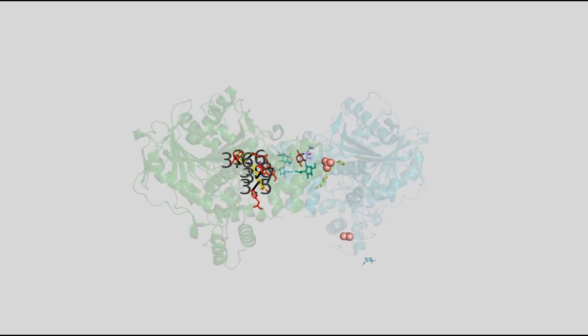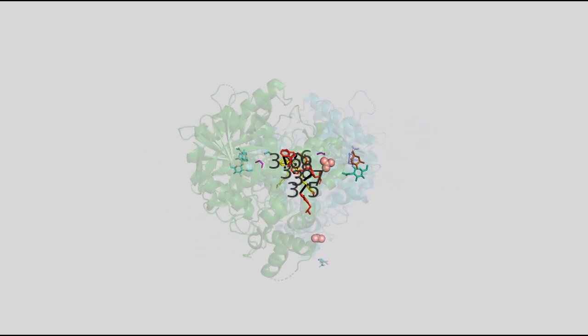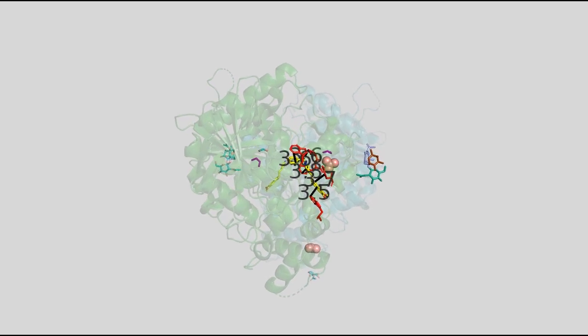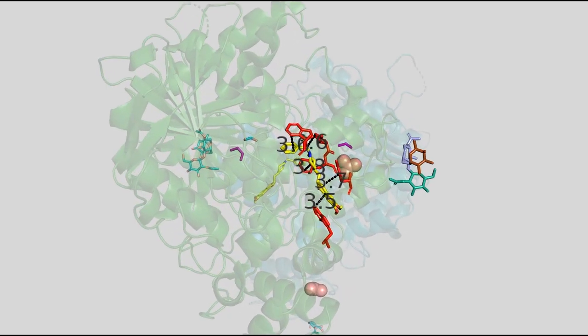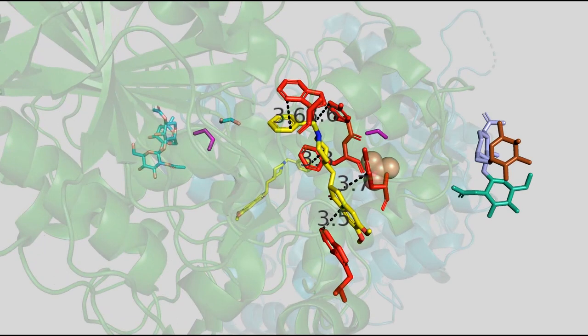We will now focus on the interactions between Donepezil and the protein structure in chain A. Donepezil forms hydrophobic interactions with five amino acids in the active site. The closest distance of the amino acids to the drug can be seen in black dashed lines, labeled with the respective distance in angstroms.